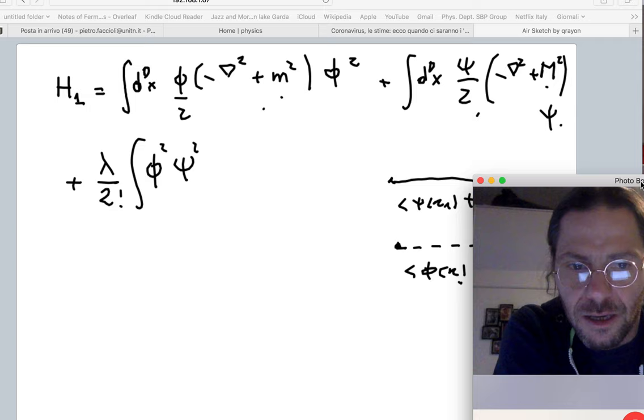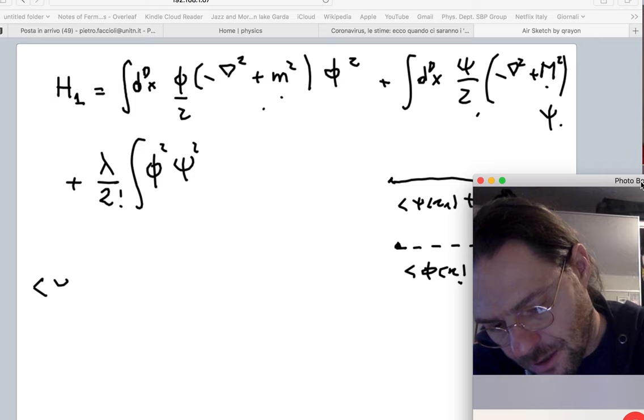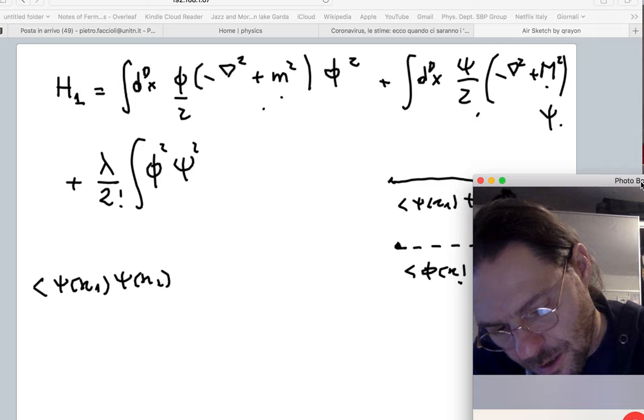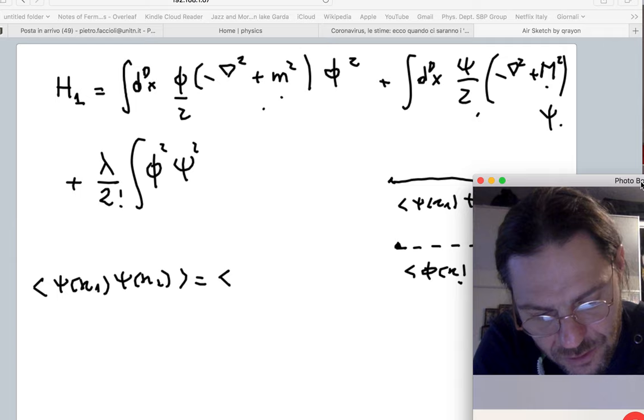For instance, we might choose this to be for the other field, and I keep on putting zero here because the correlation functions, the propagators, are always for the quadratic part of the theory. So if you go back and look at the results we have from Wick's theorem, then you should be realizing that, for instance, this guy here is basically in configuration space...